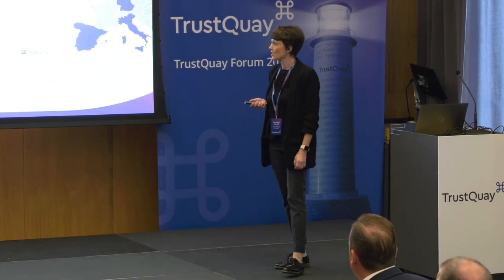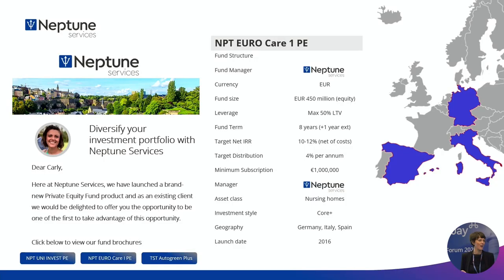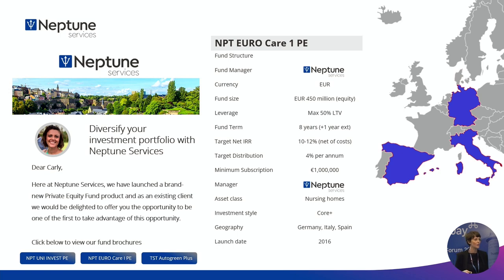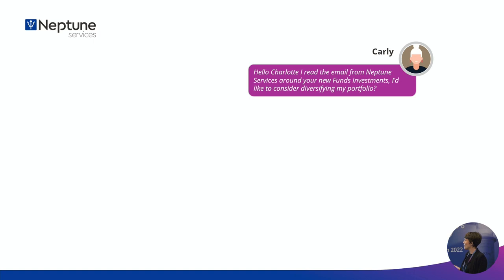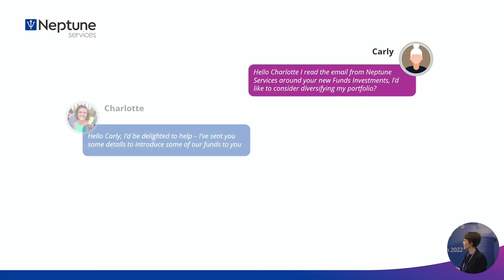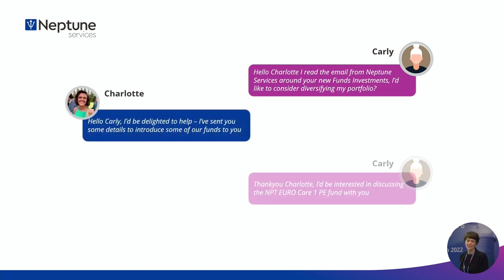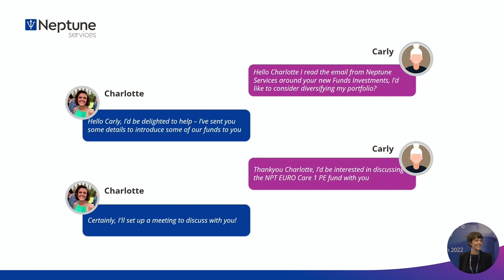So, let's assume that the marketing team at Neptune Services has made a great job and they have produced some brochures to show what are the three funds currently offered by Neptune Services. They have sent these to our existing client database and to some prospects. And on the back of that, Carly from the Carithers family has contacted Neptune Services and she's really keen in investing in one of the funds.